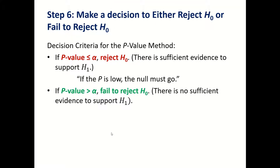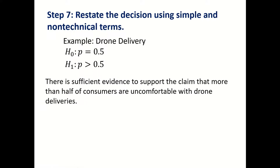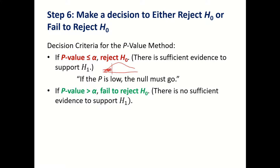Once we decide what the p-value is, we can write a conclusion. You want to compare your p-value with alpha. If your p-value is smaller than alpha, you have to reject the null hypothesis. If your p-value — which is the area in the tail — is less than alpha, that means your sample data is in the critical region.